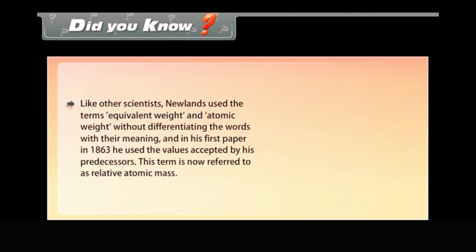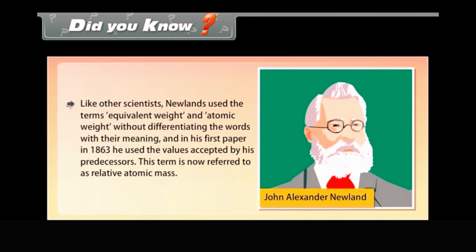Did you know, like other scientists, Newlands used the terms equivalent weight and atomic weight without differentiating their meaning. In his first paper in 1863, he used the values accepted by his predecessors. This term is now referred to as relative atomic mass.